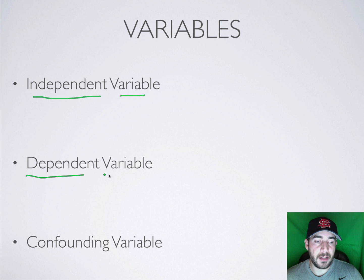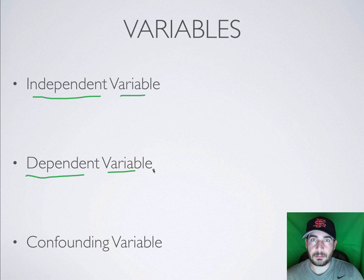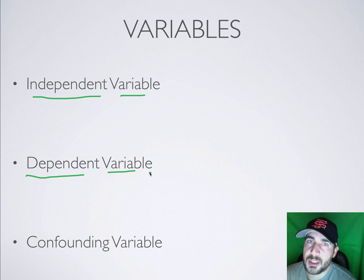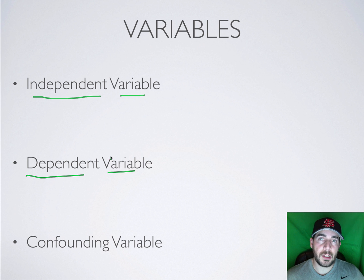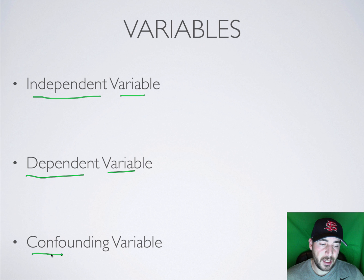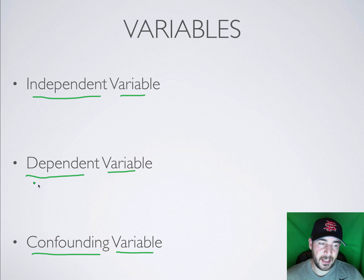The dependent variable is the variable that is being measured. If these don't make sense, we'll go through the examples and hopefully they'll make more sense. This is the variable that's being measured — the thing that's changing based on the independent variable. A confounding variable is a variable that's getting in the way that might be affecting this.